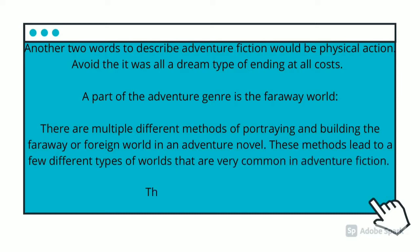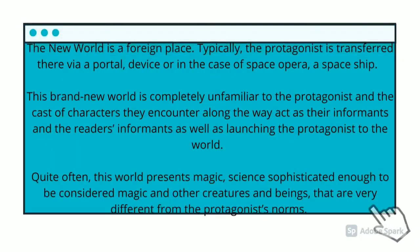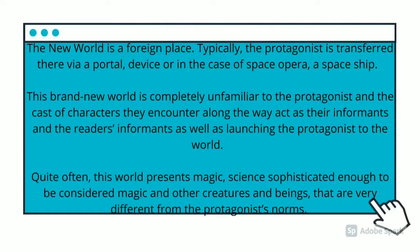The first type is the new world. The new world is a foreign place. Typically the protagonist is transferred there via a portal, device, or in the case of a space opera, a spaceship. This brand new world is completely unfamiliar to the protagonist and the characters they encounter along the way. Quite often this world features magic, sophisticated science that seems like magic, and creatures and beings very different from the protagonist's norm.